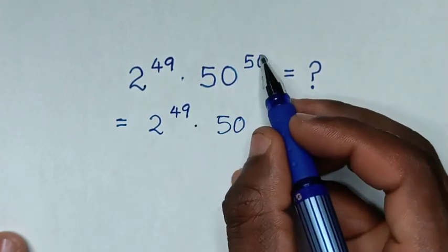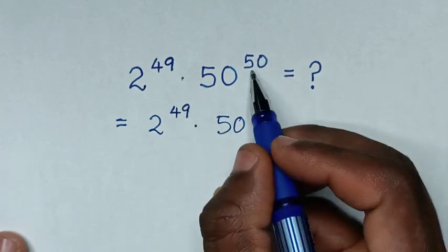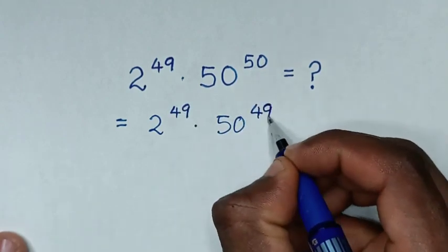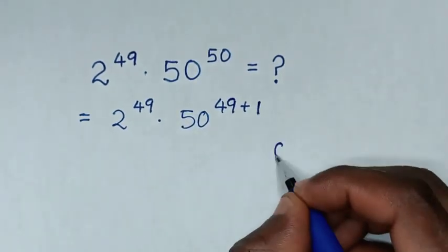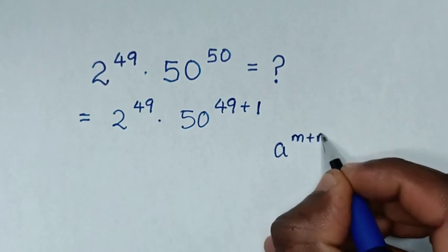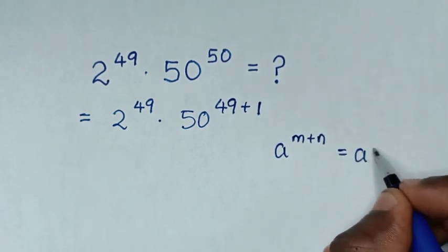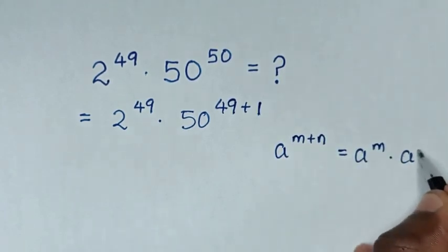For this power of 50, to have common power of 49, 50 is same as 49 plus 1. Then in here, we'll apply exponential rule that a power of m plus n is equal to a power of m times a power of n.